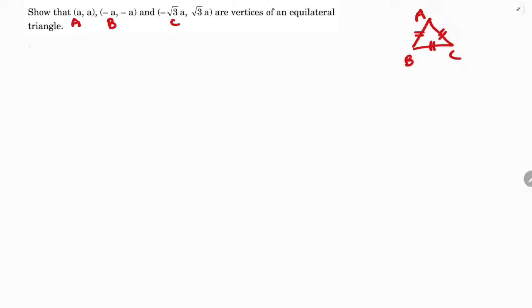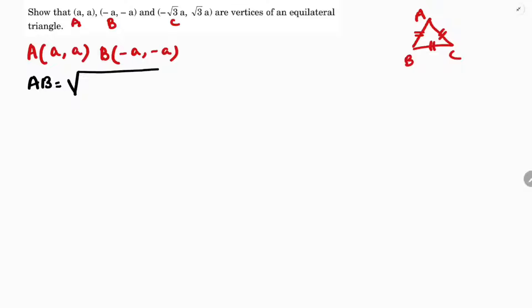To do this, I will find the distances AB, BC, and AC. First, I will take the AB distance using the formula: AB = √[(x₂ - x₁)² + (y₂ - y₁)²].